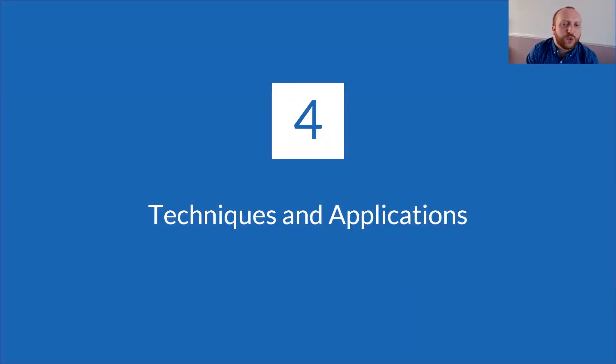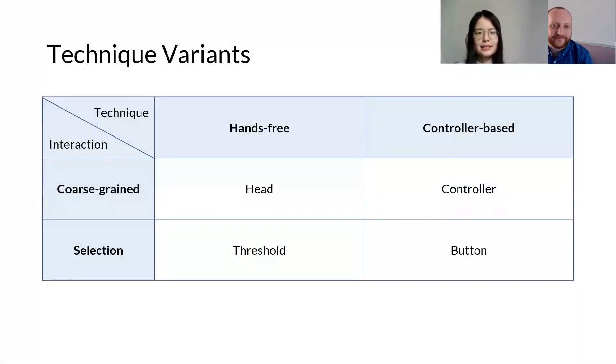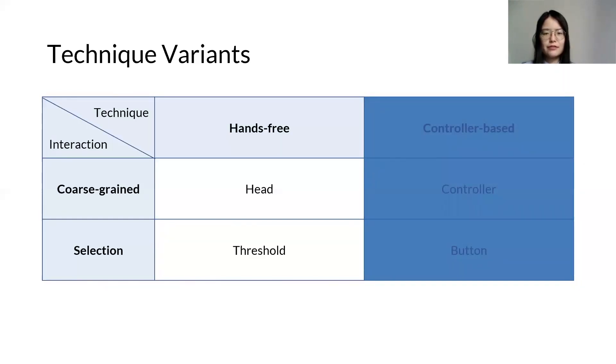I'll now hand over to Shusung, who will discuss the techniques and applications we built based on outline pursuits. Thanks, Chris. We demonstrate outline pursuits with the implementation of two concrete techniques, one for hand-free selection, and one where it extends controller-based raycasting, each leverages a different coarse-grained and selection confirmation mechanism. The hand-free version uses the head as a pointing mechanism for candidate selection. When the calculated correlation is above a given threshold, we assume the motions are matched, and the corresponding target is selected. This technique allows for hand-free applications, or for users to interact with out-of-reach objects without having to put down or stop interacting with virtual objects already in hand.